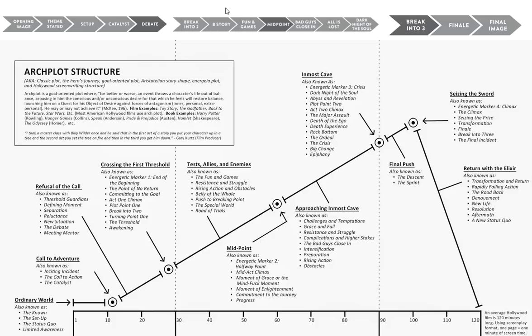Same with the second part, which is the other 25%. The dark night of the soul, the all is lost — those are really moments, not even scenes. And bad guys close in is what really has to stretch for a whole 25% of that section. The final section is probably going to resolve pretty quickly. So even though this is a great system, and it's a 15-point step-by-step process, it's not really a chapter-by-chapter outline.